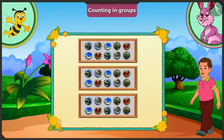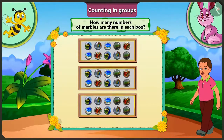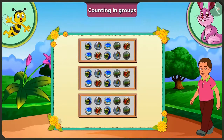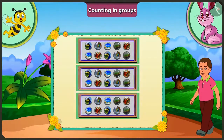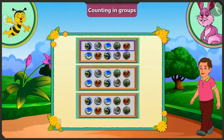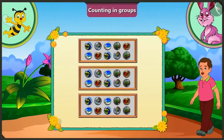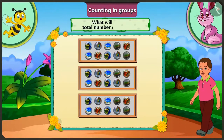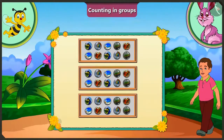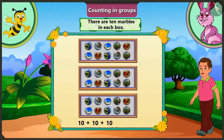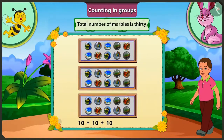Come on honey, now you tell me how many marbles are there in each box? There are five and five, ten marbles in each box. Now try to guess how many marbles are there in total. Each box has ten marbles, and if there are three such boxes, the total number of marbles is thirty.